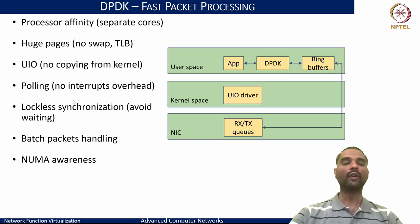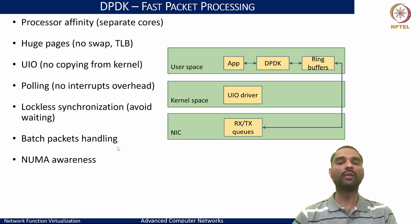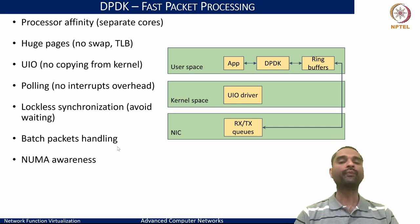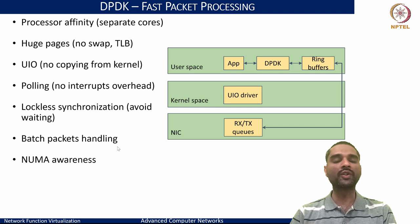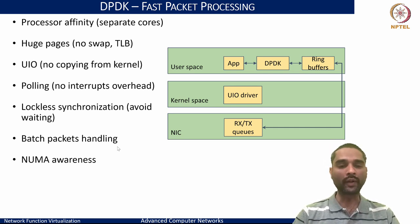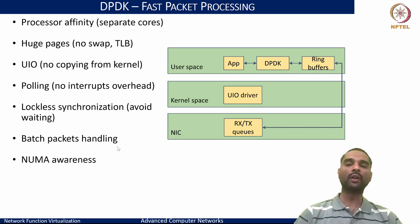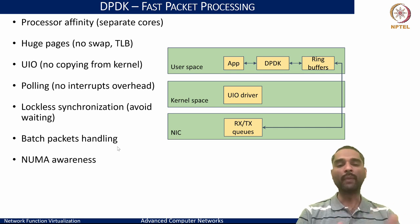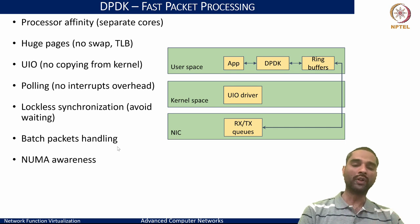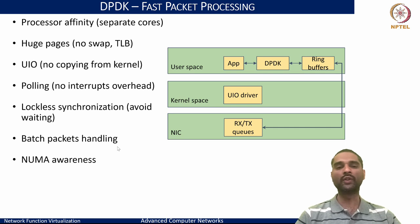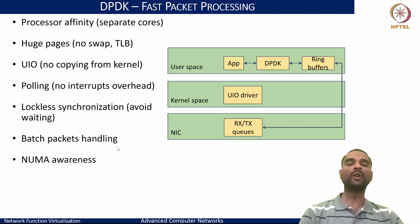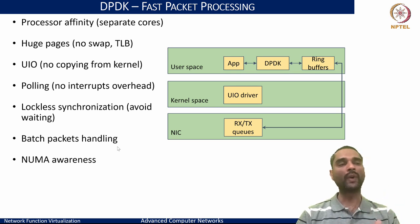Batch processing has always been a key latency-hiding technique. If transmitting a packet costs 100 units of time and copying costs 10 units, processing two packets costs 120 units rather than 110×2 = 220 units. Increasing the batch size yields greater savings. This concept — processing a queue of packets together rather than one at a time — has always been used in networking and is central to how DPDK achieves high throughput.